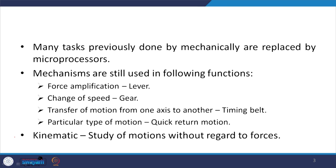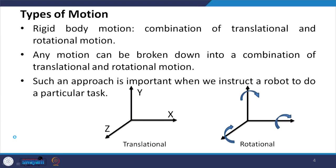In kinematics, we study motions without regard to forces — specifically how motions are transformed from one form to another. Rigid body motions are basically combinations of translational and rotational motion, and any arbitrary motion can be broken down into a combination of translational and rotational motion.